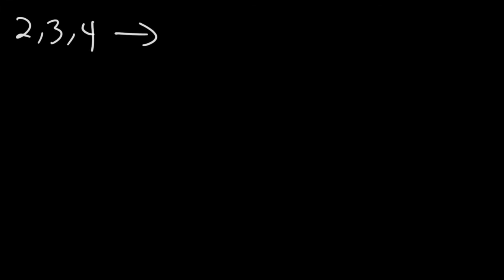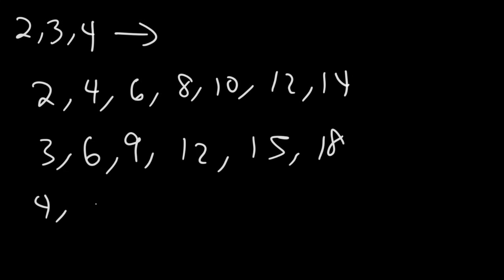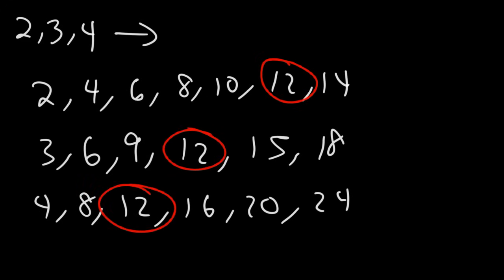Now let's try an example where we have three numbers: 2, 3, and 4. What is the LCM of those three numbers? Multiples of 2 are 4, 6, 8, 10, 12, 14. Multiples of 3 are 6, 9, 12, 15, 18. And for 4 we have 8, 12, 16, 20, and 24. Looking at these three lists, 12 is the lowest number found in each list. So the LCM of 2, 3, and 4 is 12.